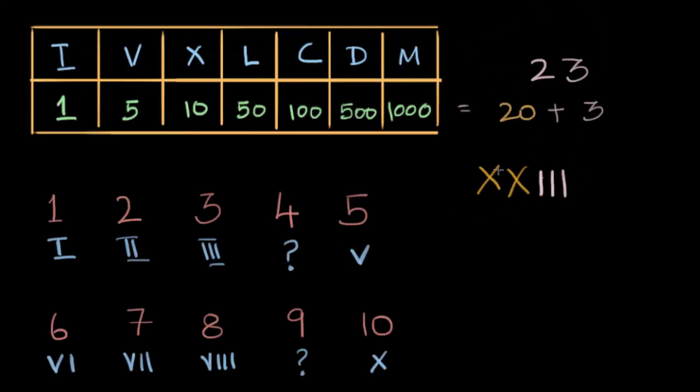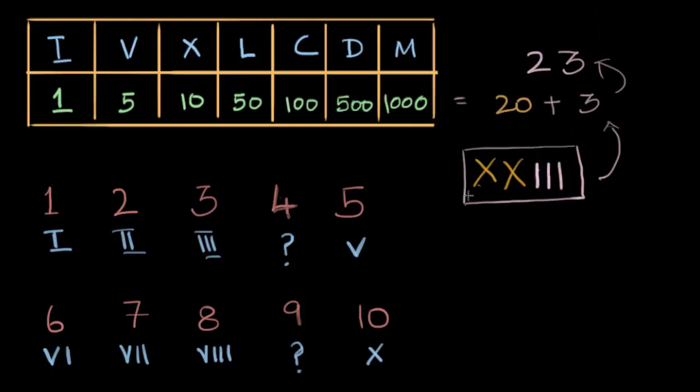And as you can see, if I had been given this number and asked what is this number, how would I have read it? I would have read it by going X is 10, X is 10, so 10 plus 10 is 20. I is 1, III is 3. So this is 20, this is 3. So 20 plus 3 is 23. So that's exactly the backward process that I would have used. And you can see that in all these cases, the bigger number is what we write first and then the smaller numbers.